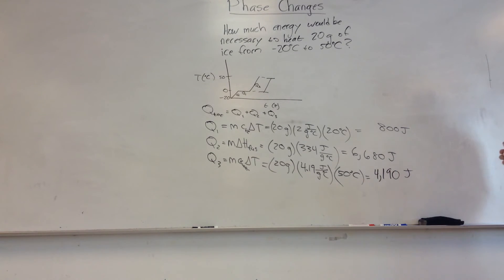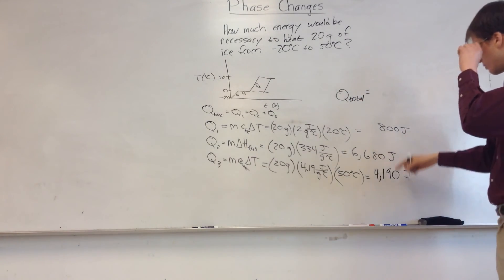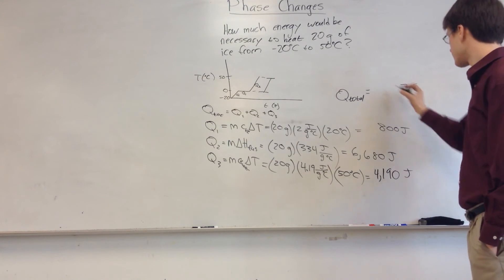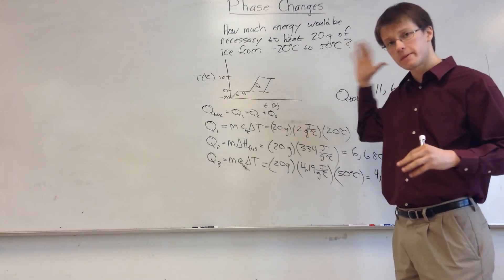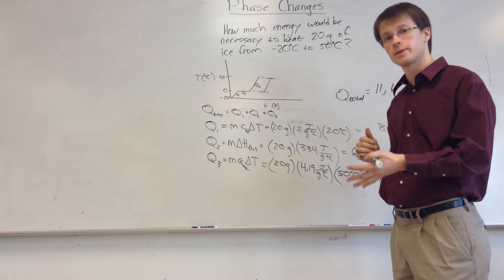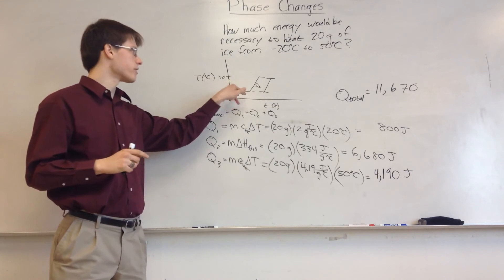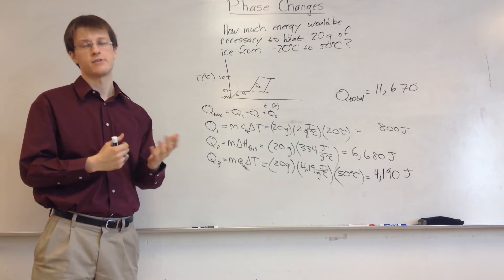We add these three values together to get Q total: 800 plus 6,680 plus 4,190 gives us 11,670 joules. That's the total amount of heat needed to not just increase the temperature but also convert it from a solid to a liquid. This is the kind of problem where you need to be careful to use the right equation for each segment to get the correct amount of energy.